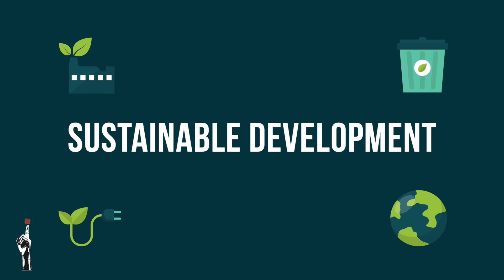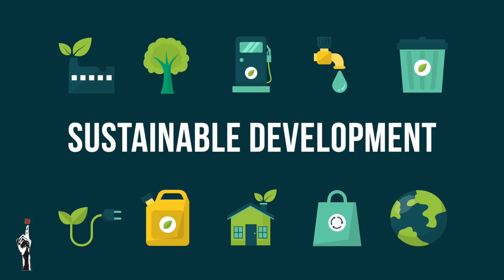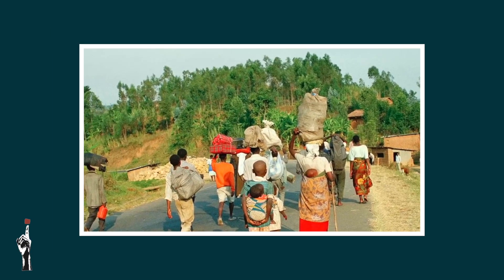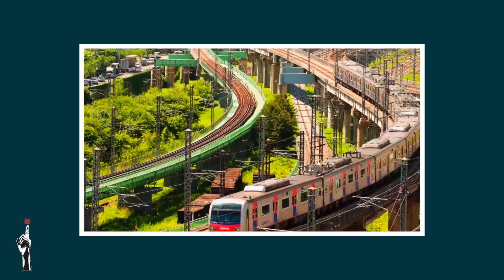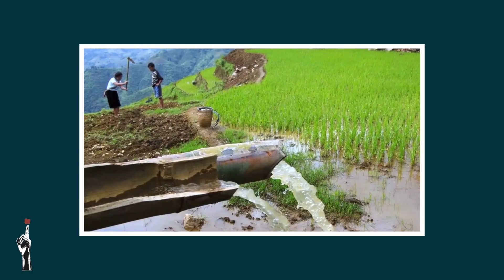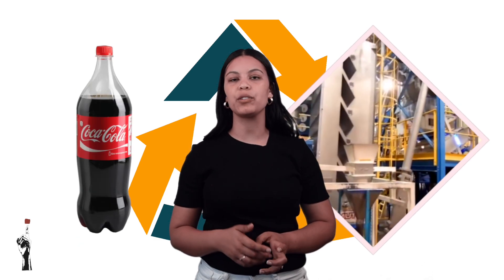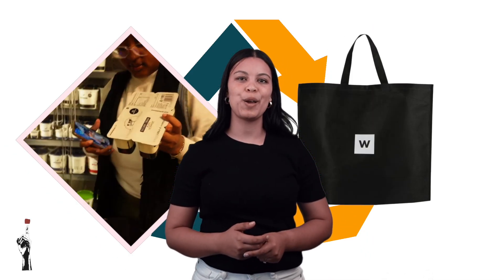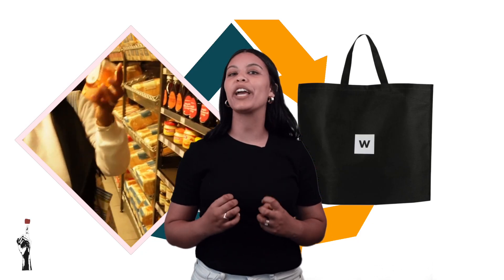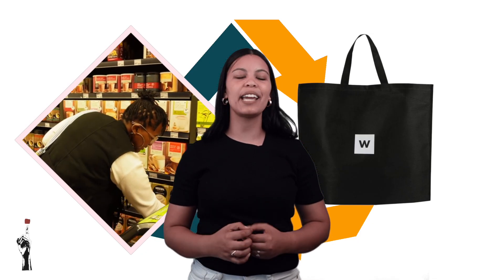Sustainable development means to meet the basic needs of people today without compromising the needs of future generations. Many people live in poverty and need economic growth to ensure that even the poorest people survive. Businesses should create more goods and services by using fewer resources and producing less waste. Businesses that perform sustainable development well include Coca-Cola, which recycles every plastic or glass bottle they receive. Another example is Woolworths, which uses black material bags for every shopping opportunity instead of plastic bags.